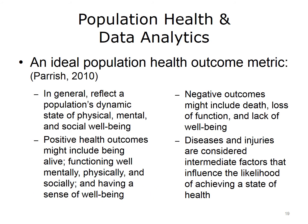For data analytics, the primary concern relates to what metrics are relevant and how they should be accessed. An ideal population health outcome metric, as described in Parrish's 2010 article, has four characteristics: it should reflect a population's dynamic state of physical, mental, and social well-being. Positive outcomes include being alive, functioning well mentally, physically, and socially, and having a sense of well-being. Diseases and injuries are considered intermediate factors that influence the likelihood of achieving health, but are not health itself.